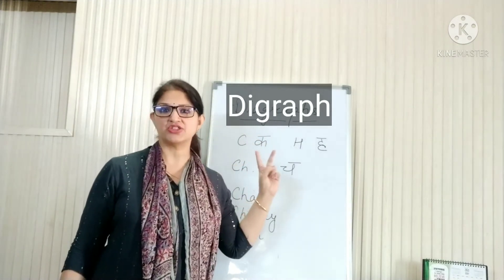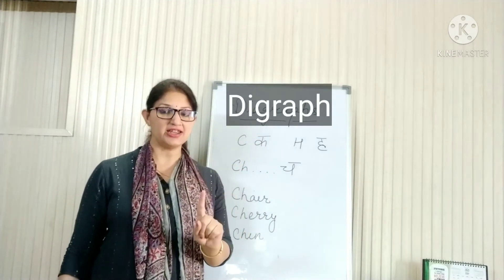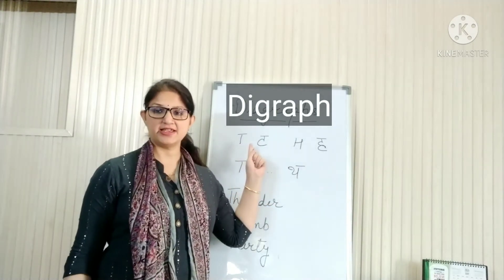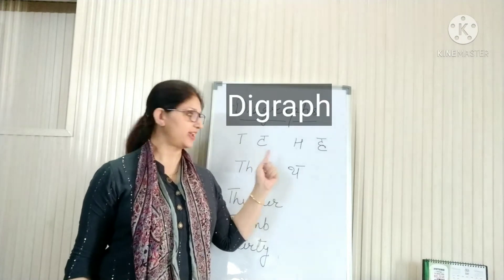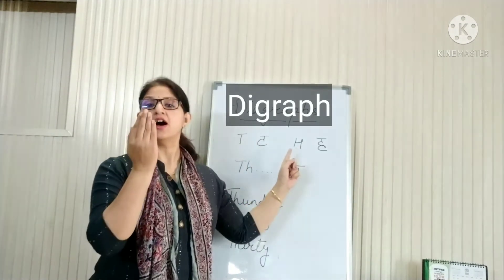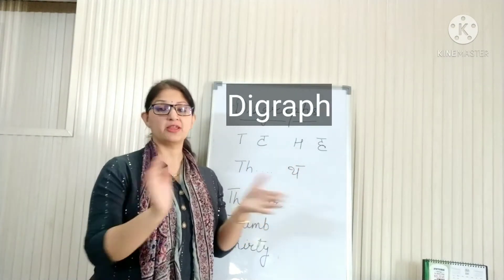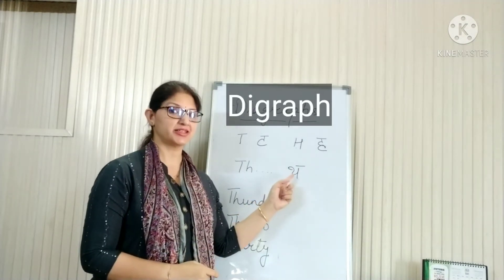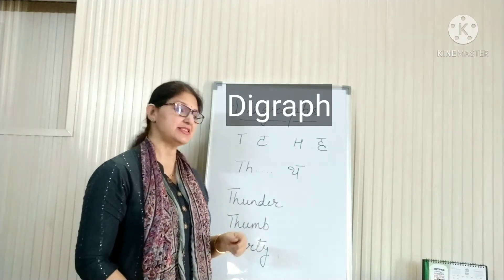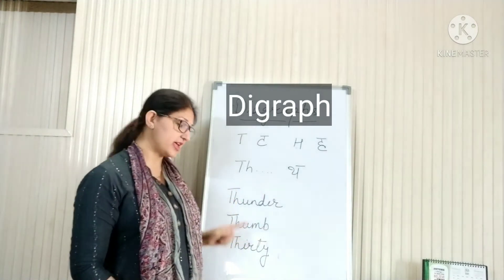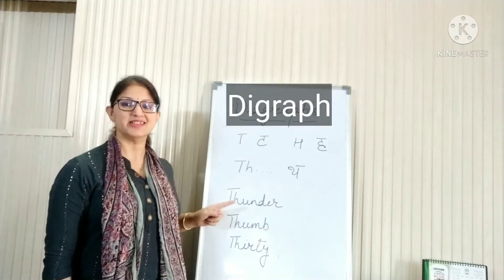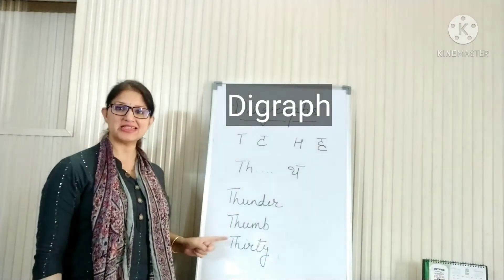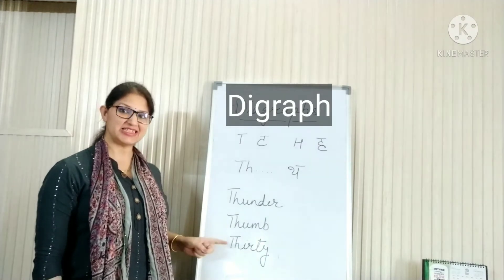Digraphs are two letters. Digraphs make one sound. Letter T says 't', and letter H says 'ha'. When they mix together, they make a new sound — Th! Can you hear the th sound in these words? Thunder. Thumb. Thirty.